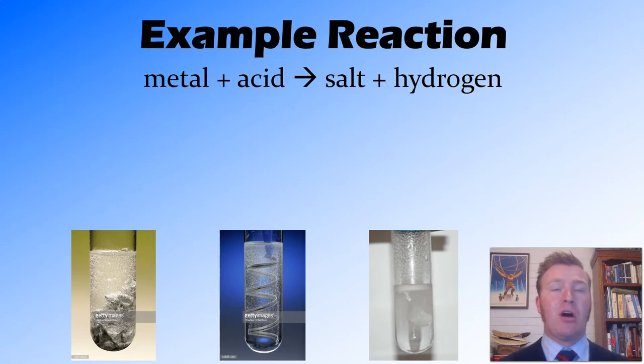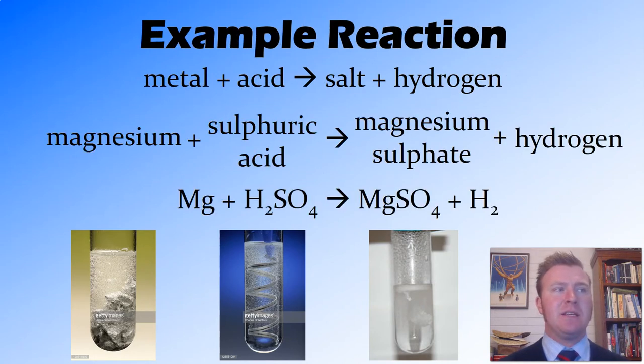So an example of this reaction is when magnesium reacts with sulfuric acid. We get that hydrogen formed, as well as a salt, which in this case is magnesium sulfate. That magnesium is from the magnesium metal, and the sulfate is the anion in sulfuric acid.